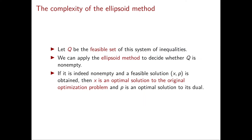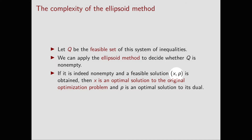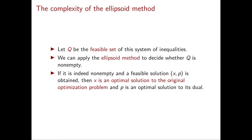We then apply the ellipsoid method to decide whether Q is non-empty. If the ellipsoid method tells us that Q is non-empty and returns a point X, P in Q, then by strong duality, X is an optimal solution to our original linear programming problem and P is an optimal solution to its dual. On the other hand, if the ellipsoid method tells us that Q is empty, then again from strong duality, our original linear programming problem doesn't have an optimal solution.